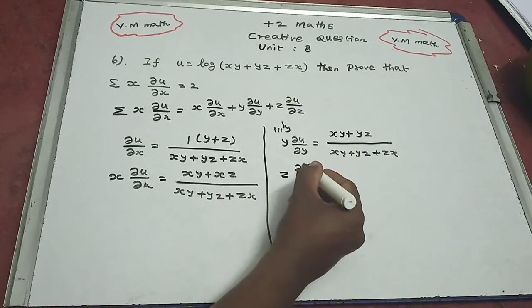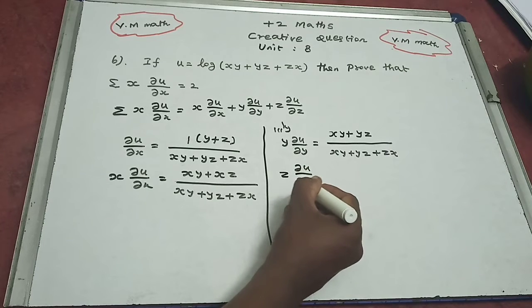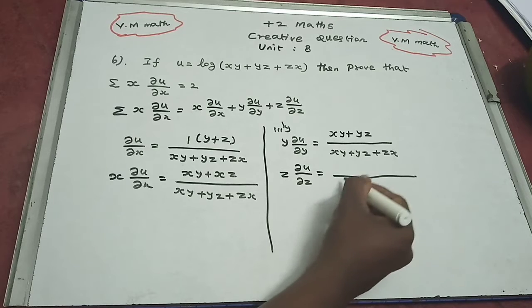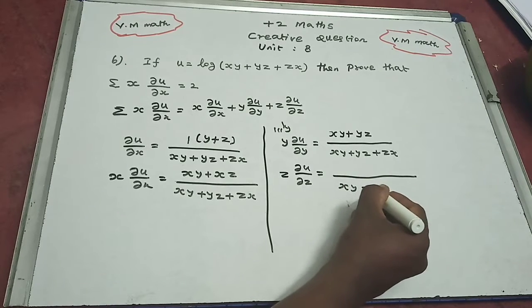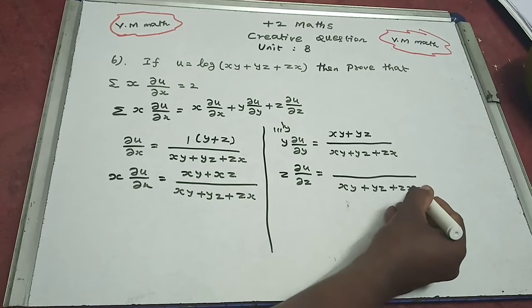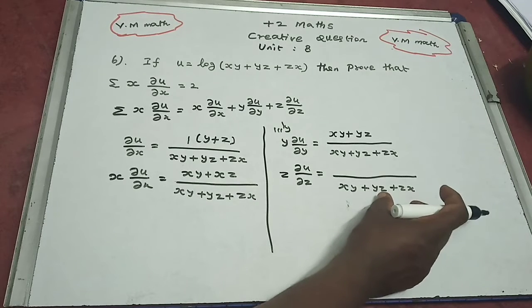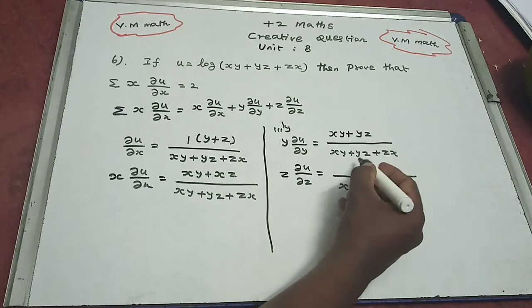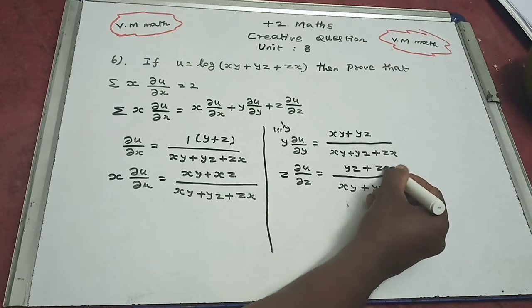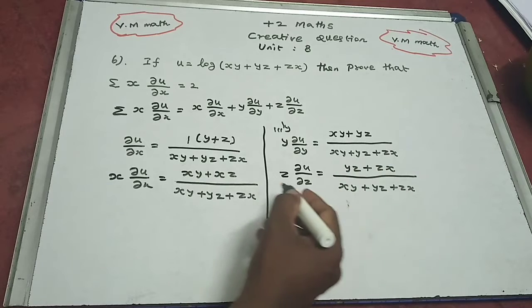z into ∂u/∂z. The denominator is the same: xy plus yz plus zx. The z terms are yz plus zx. So the summation of x into ∂u/∂x.